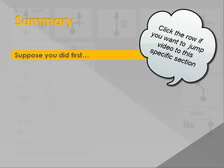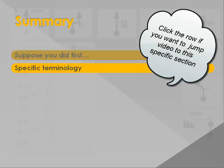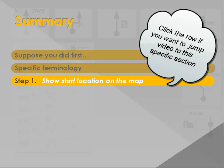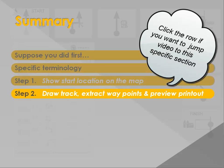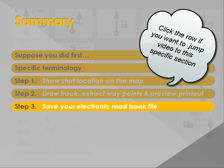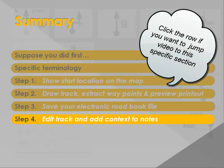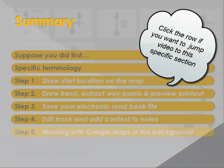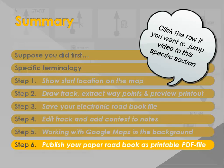We will first make sure you installed the necessary software, then look at some key definitions. In step 1, we will show the starting location on your map. In step 2, you will draw your track, extract waypoints, and preview your printout. In step 3, we will save your electronic roadbook file. In step 4, we will edit the track and add context to your notes. In step 5, we will work with Google Maps in the background. In step 6, we will publish your paper roadbook as a printable PDF.